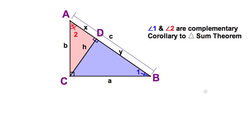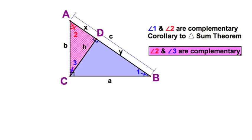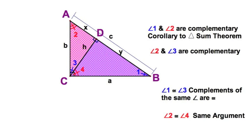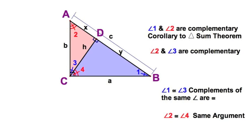Let's review a few things. Angles 1 and 2 — the blue and the red one — must be complementary. After all, this is a right triangle. This is also a right triangle, so 2 and 3 are complementary. By that reasoning, 1 and 3 are congruent — the two blue ones — they're complements of the same angle. I can repeat that same argument for angle 4, and now I've got the two red angles congruent and the two blue angles congruent.